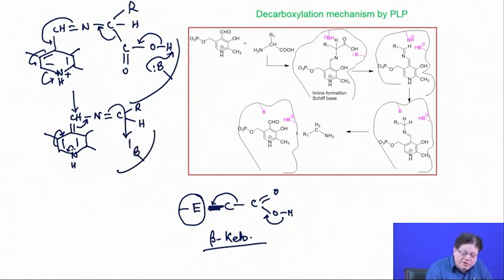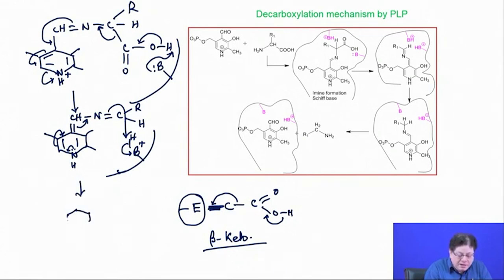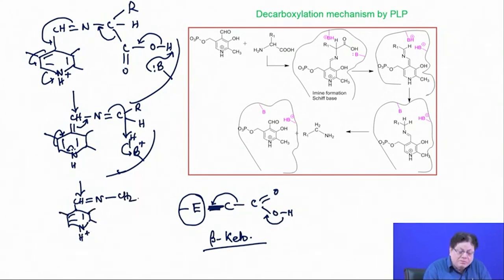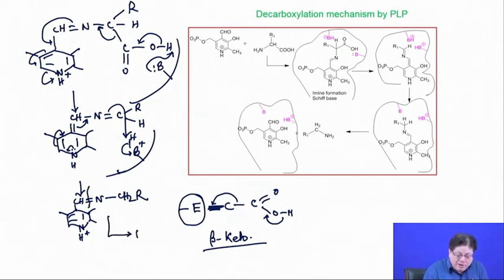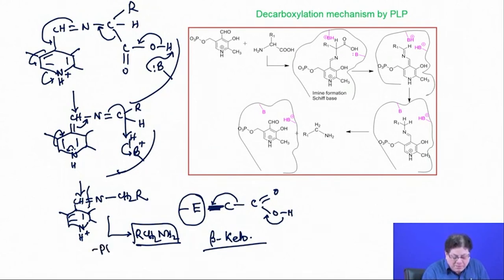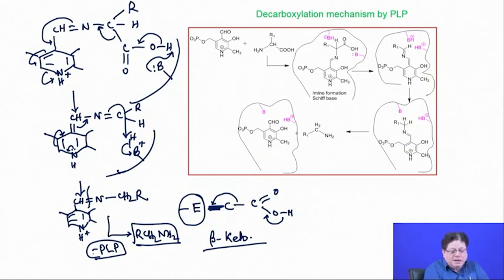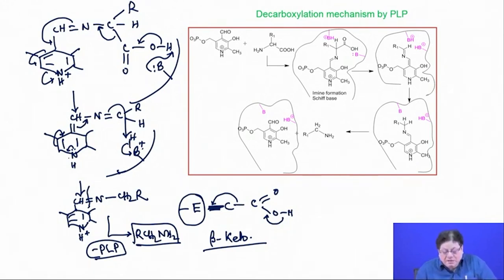The base already holds the abstracted hydrogen and is then released at the active site. The final product after hydrolysis is R–CH₂–NH₂ — the primary amine — and PLP is released as the aldehyde so it can participate again in the reaction with another substrate. The pyridoxal is regenerated as the aldehyde at the active site. That is the mechanism of decarboxylation.